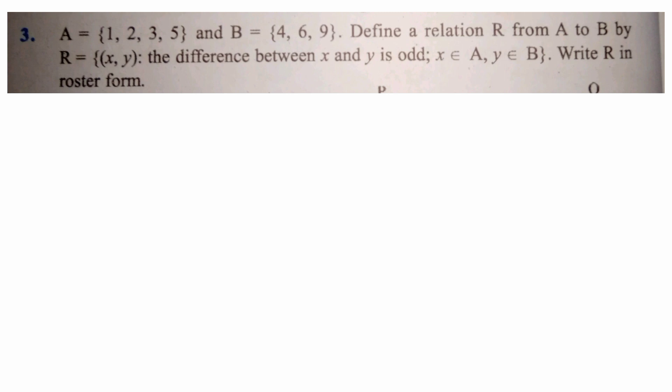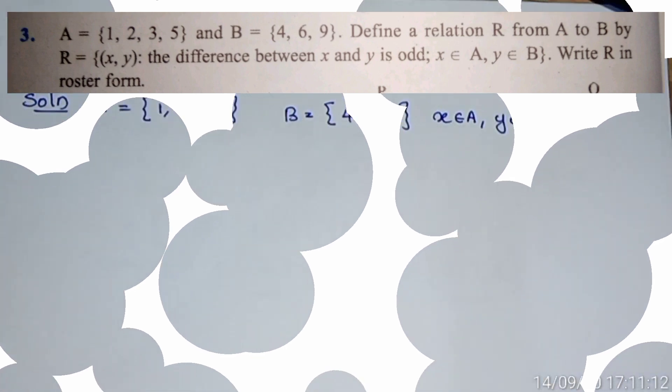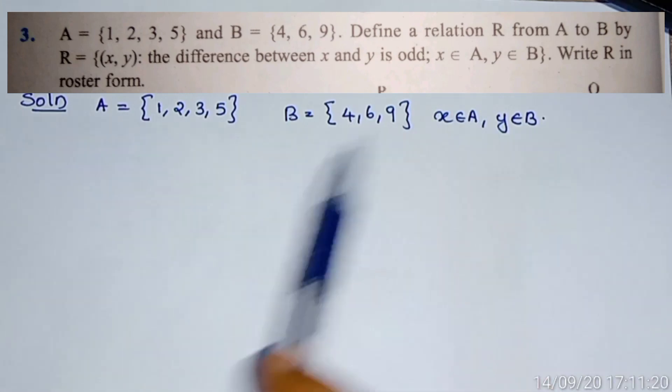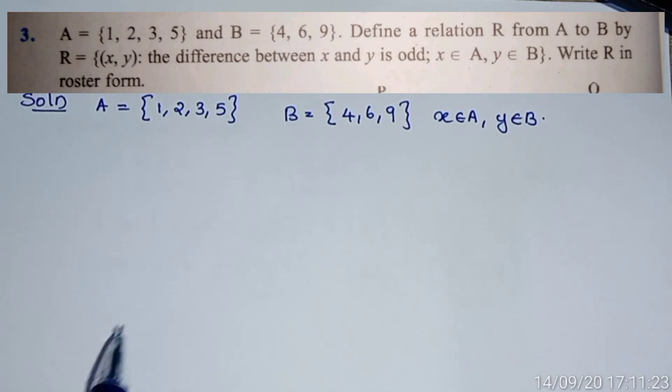Third question: A equals {1, 2, 3, 5} and B equals {4, 6, 9}. Define a relation R from A to B by R equals the set of ordered pairs (x, y) such that the difference between x and y is odd, where x is an element of A and y is an element of B. Write R in roster form. The relation between x and y is that the difference between x and y is odd.